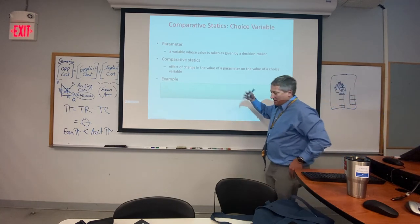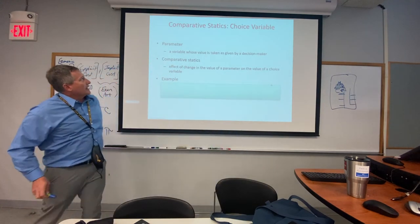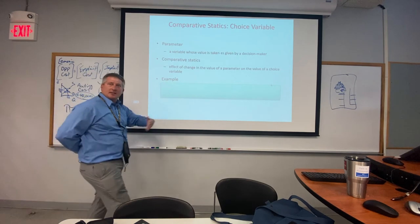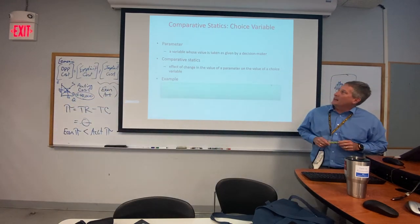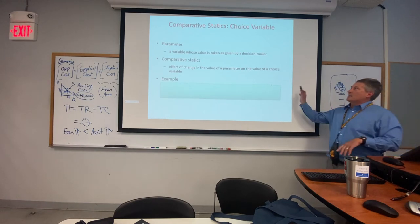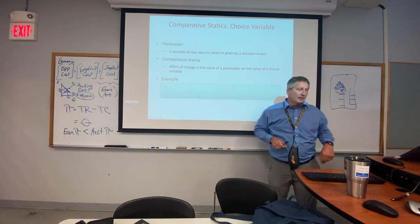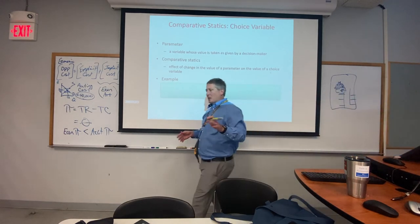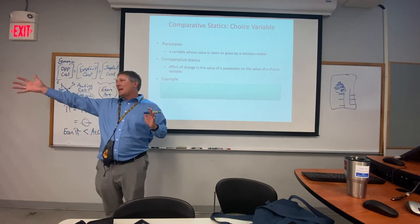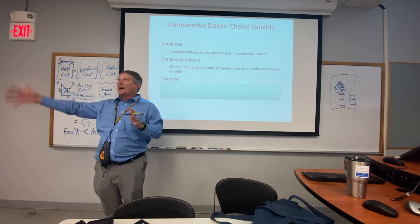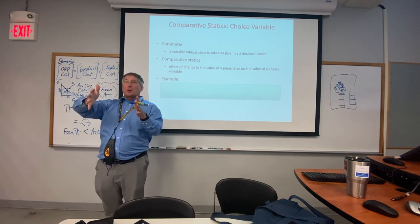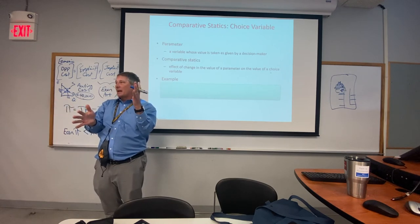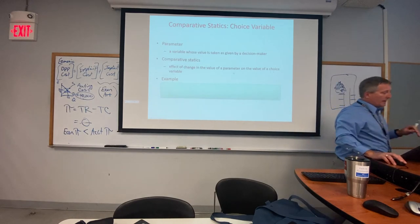A parameter is a variable that is given to you — like the price in a competitive market, you can't change it. A choice variable is what you decide given that parameter. For example: I'm a competitive farmer and the price of corn is five dollars a bushel — that's the parameter. Given that price, I choose how many acres to devote to corn. The number of acres is the choice variable.